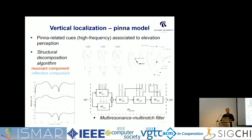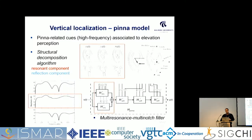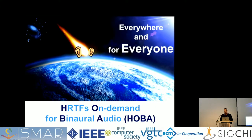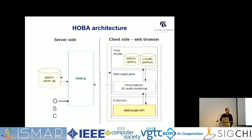We can extract acoustic information as localization cues for elevation from the spectrum of HRTFs. I explain this through the pinna model — an external ear acoustic model — where we consider the ears as resonators with resonances depending on the direction of arrival of sounds, appearing as peaks in the HRTFs, and notches caused by reflections in the pinna contours, highly dependent on ear geometry. From this we developed the HOBA framework — HRTFs on demand for binaural audio.